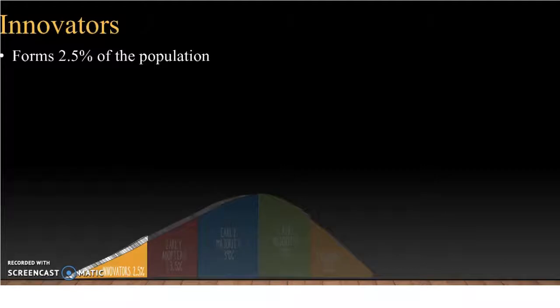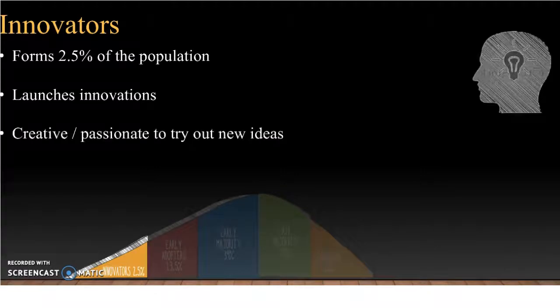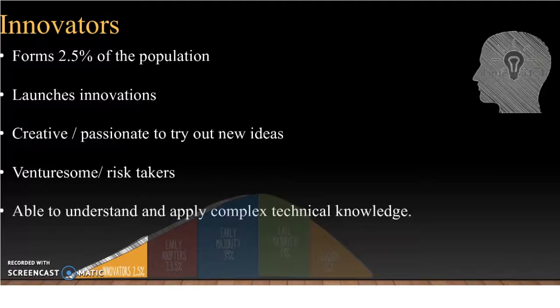We will have a look at the dominant characteristics and values of each adopter category. Innovators form a small group of the population. They play a major role in the diffusion process by launching innovations or new ideas in the social system. They are very eager to try new ideas. The salient feature of innovators is venture-someness — they can be considered as the risk-takers in the social system. The prerequisites of an innovator include the ability to understand and apply complex technical knowledge.